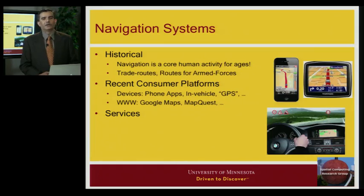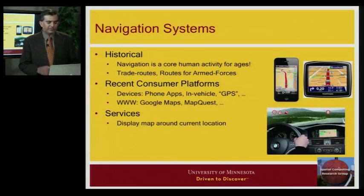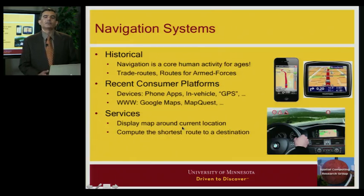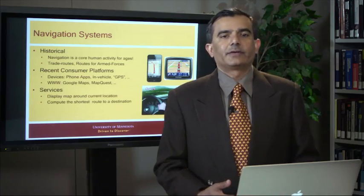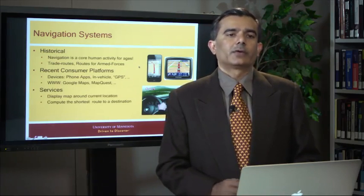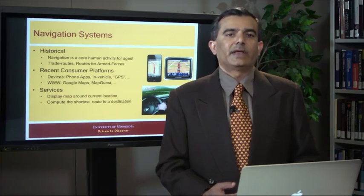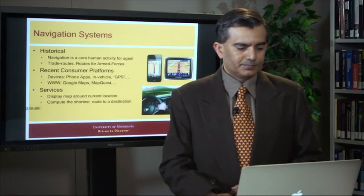Another platform is the World Wide Web. Beginning in the mid-90s, services such as MapQuest appeared, and in the last decade, Google Maps. From a desktop computer or tablet, you can go on the web and also do routing. These systems can display a map around your current location, compute distances, and find routes to a destination. Navigation systems are often built around what we call spatial networks — for example, road networks — but you could also use public transportation such as trains.